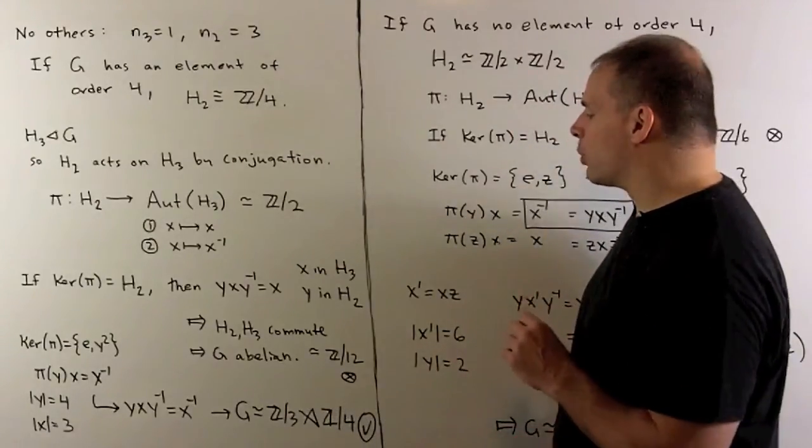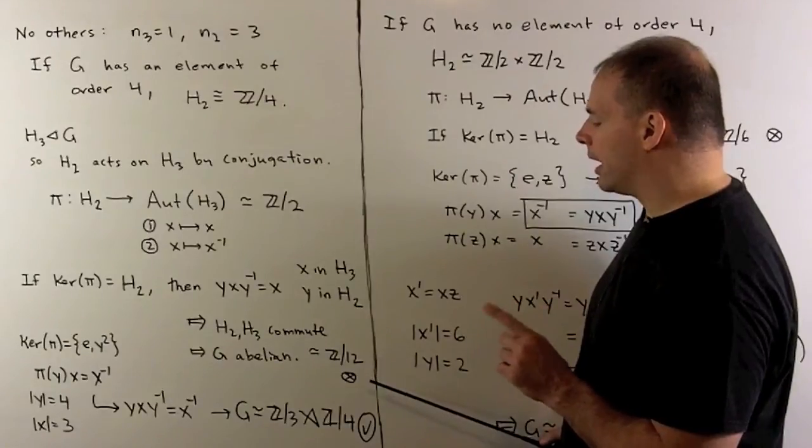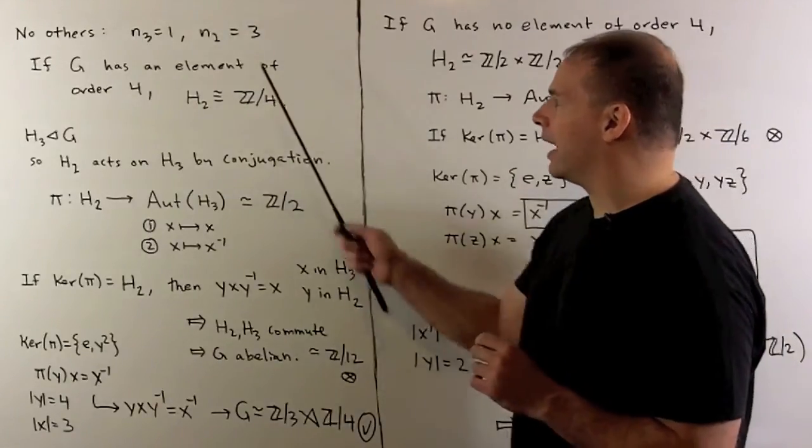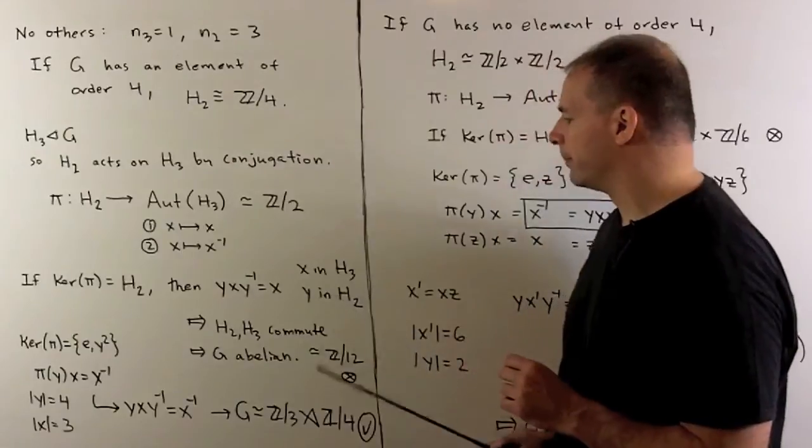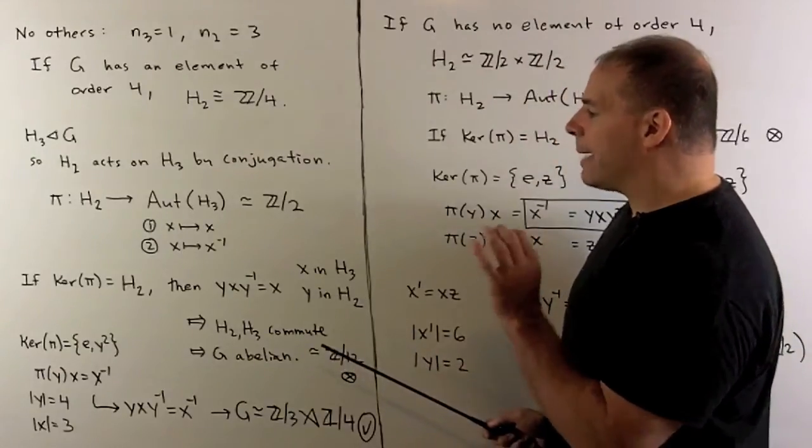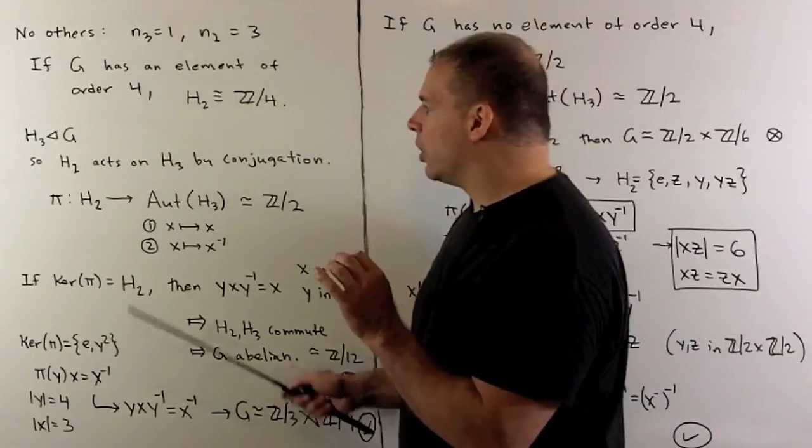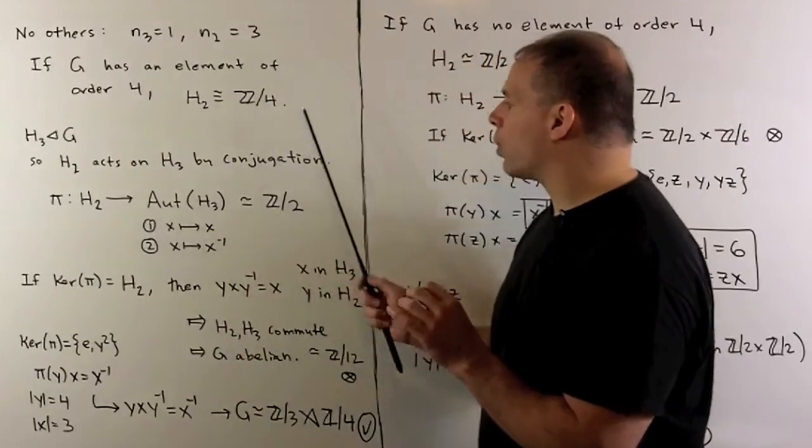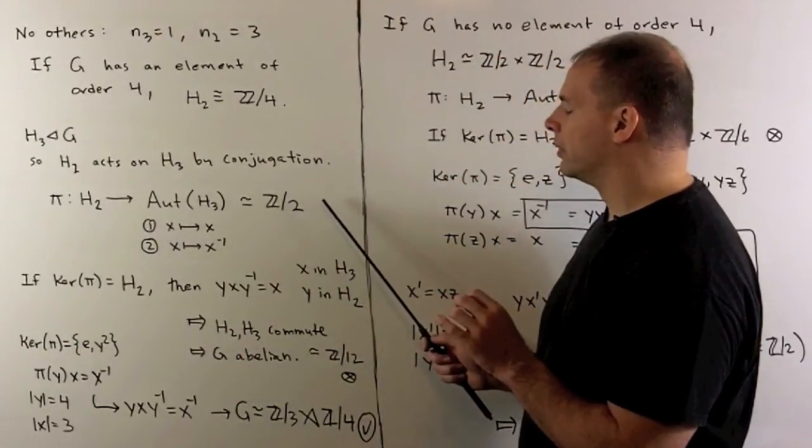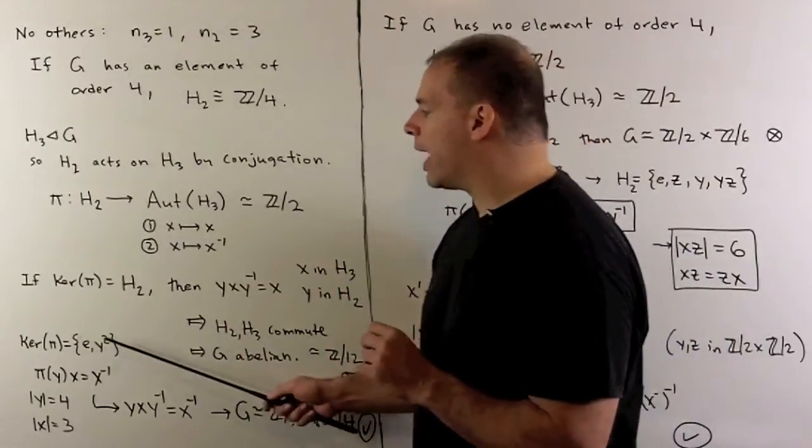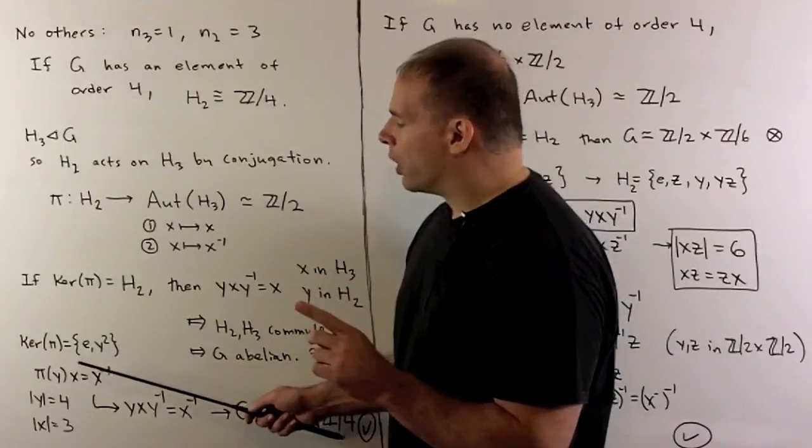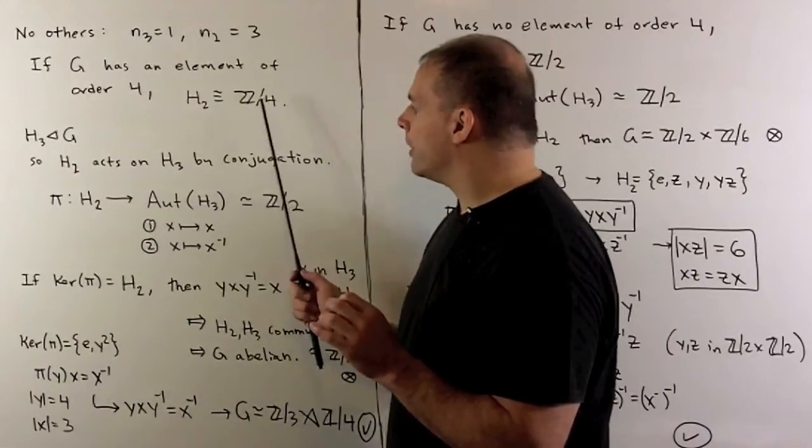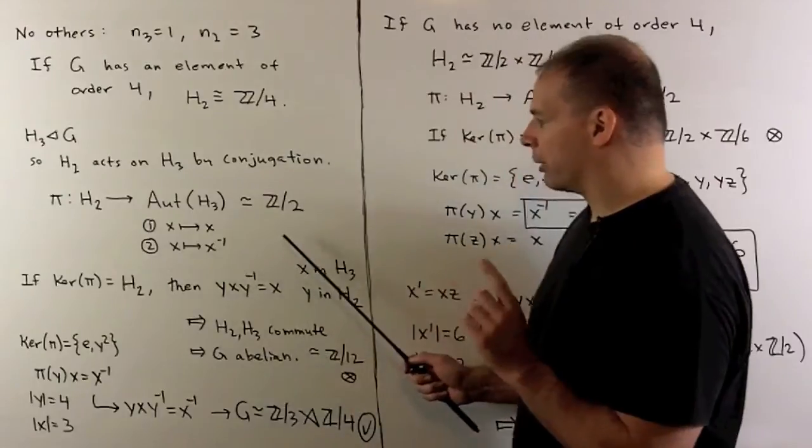Now, we can't have that because we're assuming that n sub 2 equals 3. So that means I'm going to have to have a non-trivial homomorphism from Z mod 4 to Z mod 2. So the kernel's going to have to have two elements. One of our elements in our Z mod 4 is going to have to map to this inverse automorphism.